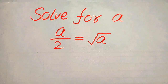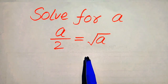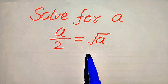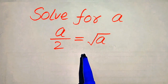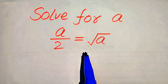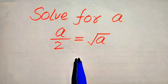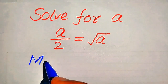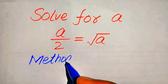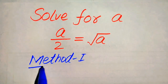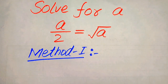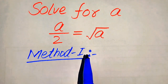Hello everyone. We need to solve for all values of a if a over 2 equals the square root of a. We find all values of a and at the end we check whether these values satisfy the given equation. We solve this problem using two methods. If you have another method in mind, please write it in the comment section.